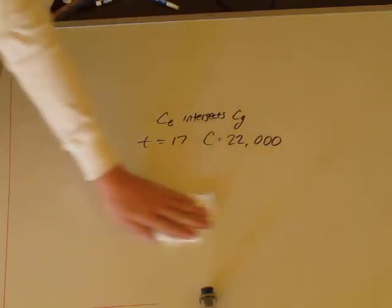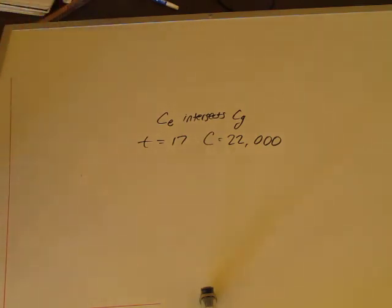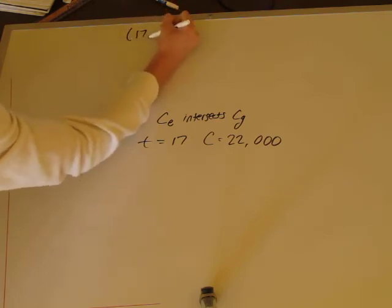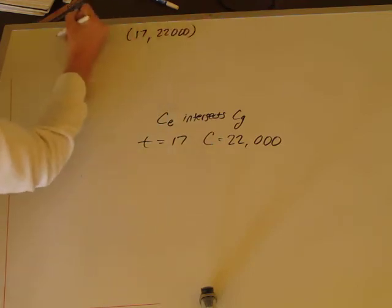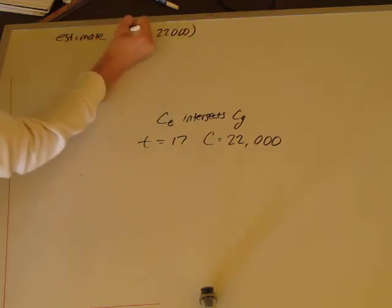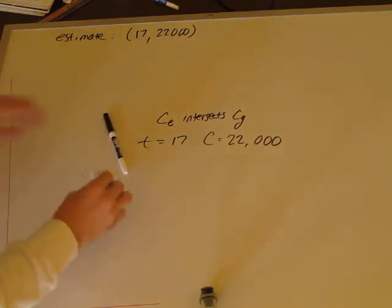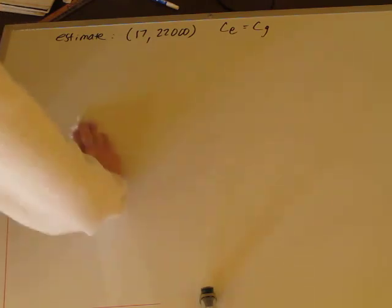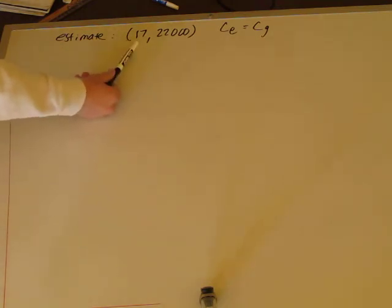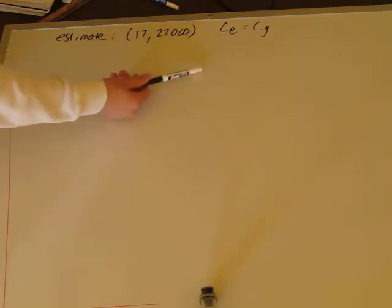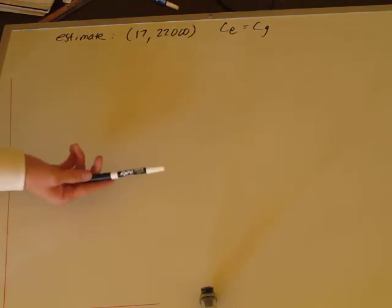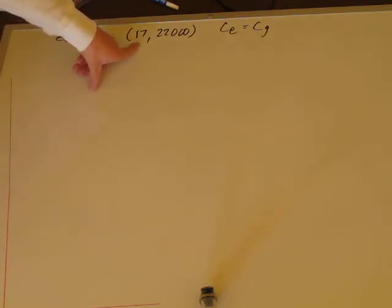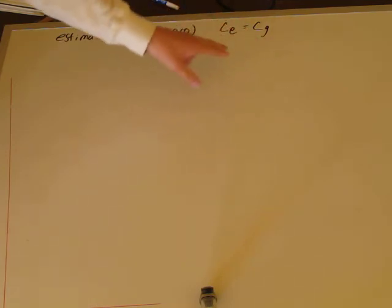Our estimate is t equals 17, cost equals $22,000. Now I want you to do the same thing for when the cost of electric equals the cost of solar, and when the cost of gas equals the cost of solar — use the graph to estimate those intersection points. Pause the video and do that, then we'll find the exact solution to the system.